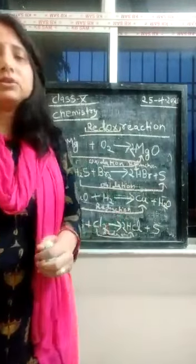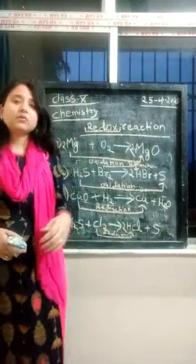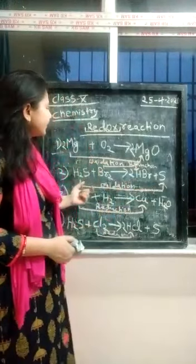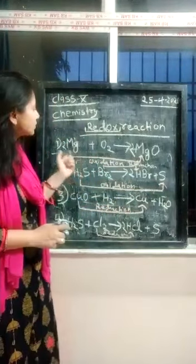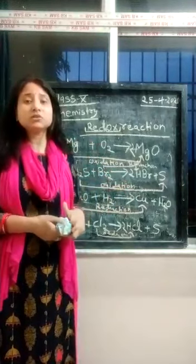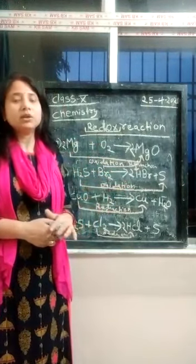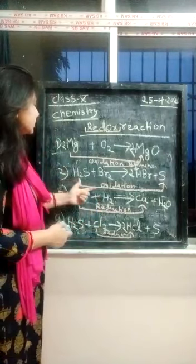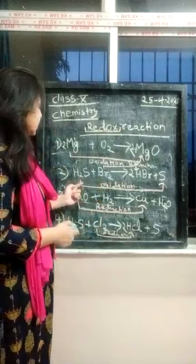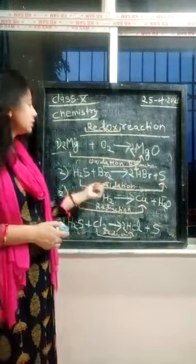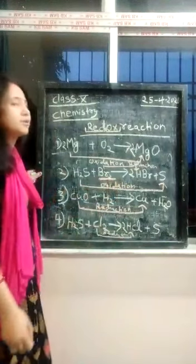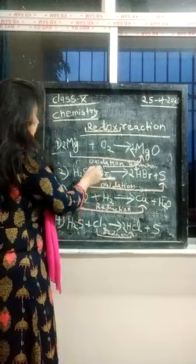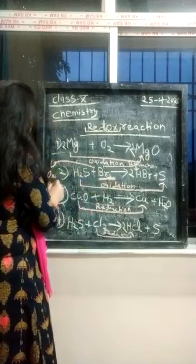Now we will go ahead to discuss the reducing agent and oxidizing agent in these reactions. In reaction 2, bromine is present — bromine is oxidized. Whatever compound, element, atom, or molecule — whatever species causes another species to be oxidized — that is the oxidizing agent. Because of bromine's presence, the particular compound is oxidized. So bromine is the oxidizing agent.